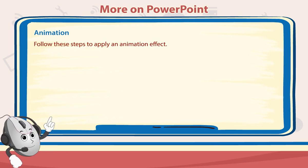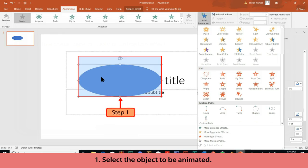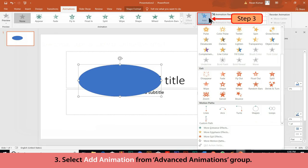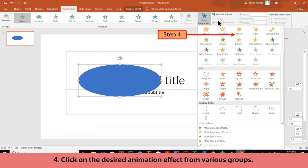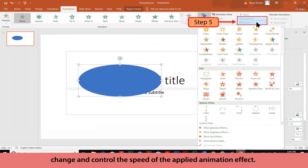Follow these steps to apply an animation effect: Select the object to be animated, then click on the Animations tab on the ribbon. Select Add Animation from the Advanced Animations group, then click on the desired animation effect. Specify timings in the Duration and Delay buttons in the Timing group to change and control the speed of the applied animation effect.